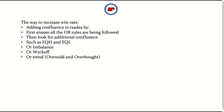So the way to increase win rate — basically everything to do with this video is about adding confluence, and kind of not getting stopped out, but we'll focus on adding confluence to trades. The main way to add confluence is first making sure all of the order block rules are being followed. If you don't know the order block rules, make sure you check out my video on that.